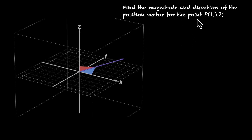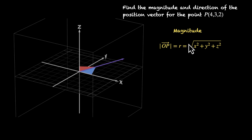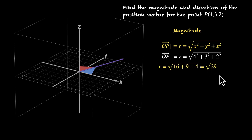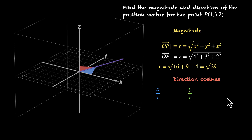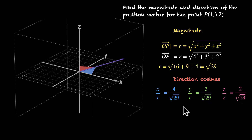Let's practice. Here's a point (4, 3, 2). Let's find the magnitude and direction of position vector OP. The magnitude is √(x²+y²+z²) = √(4²+3²+2²) = √(16+9+4) = √29. So the magnitude R is √29. For the direction cosines: cos α = x/R = 4/√29, cos β = y/R = 3/√29, and cos γ = z/R = 2/√29. These three are our direction cosines.